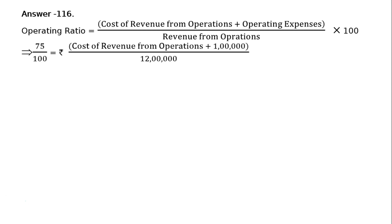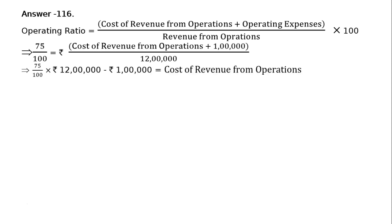This is because the 100 has been cross-multiplied. Since we are writing 75 upon 100 on the left-hand side, the 100 goes to the denominator on the LHS and does not appear on the RHS. Therefore, the answer is: ₹12 lakhs × 75% minus ₹1 lakh equals Cost of Revenue from Operations.